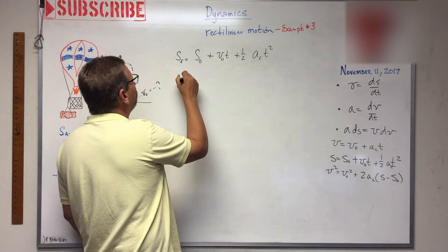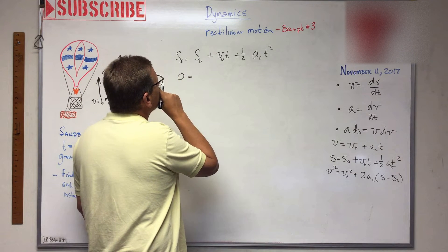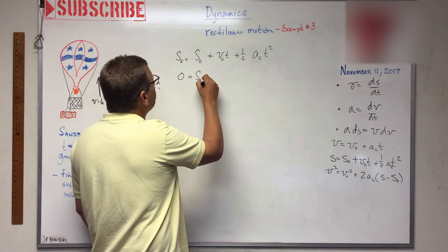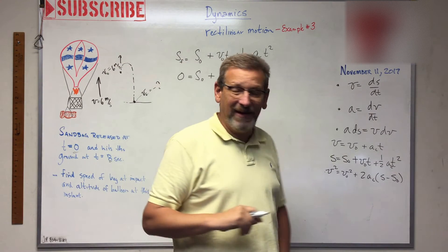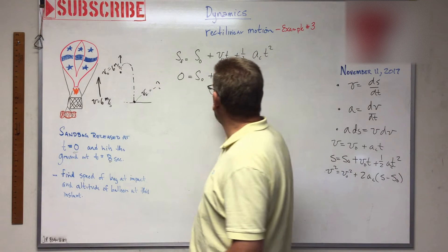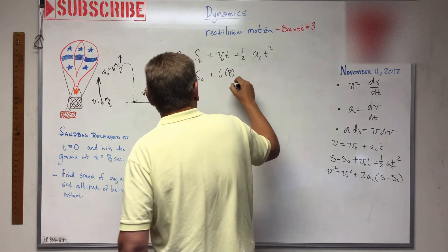So here is s_naught, and then plus what was the initial velocity for the sandbag? It was six meters per second upwards times t. It fell for eight seconds, didn't it?